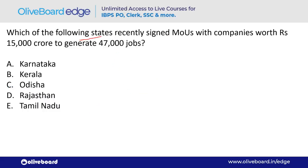Which state recently signed MOUs with companies worth ₹15,000 crore to generate 47,000 jobs? The answer is Tamil Nadu — option E.